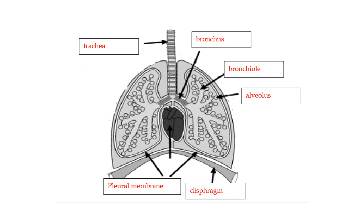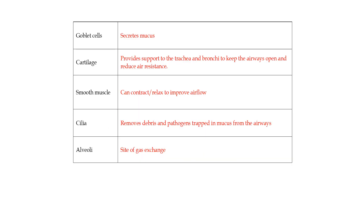The first question is labeling the different parts, which I have done here — that's very easy and straightforward. The second part is to figure out the functions of the different parts of the gas exchange system. For example, the goblet cells: they secrete mucus, which is useful for trapping pathogens or foreign particles that may enter the gas exchange system.